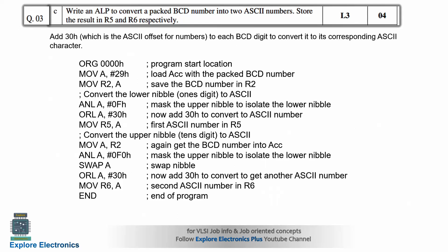Then the next question 3C: write an ALP to convert a packed BCD number into two ASCII numbers and store the result in R5 and R6 respectively. If they want to store the result in R5 and R6, you store the first ASCII number in R5 and the second ASCII number in R6. We need to add 30H to each BCD digit to convert it to ASCII, place the first result in R5, then take the second digit and place it in R6. This is how we write the program to convert a BCD number to ASCII numbers.